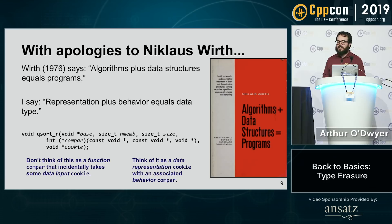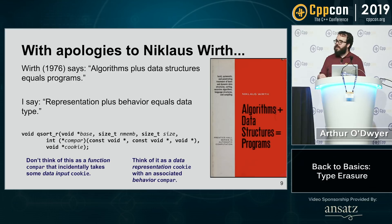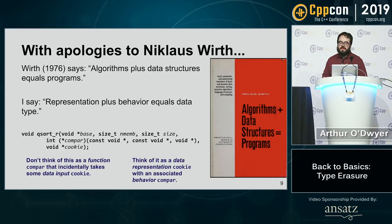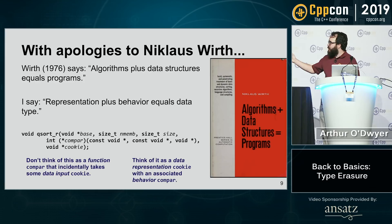Niklaus Wirth, in 1976, wrote a book called Algorithms Plus Data Structures Equals Programs. In the same way, I could say: if I have a behavior and a representation — an algorithm and a data structure — behavior plus representation equals data type. What is a data type? It's a representation — what do the bits look like — and it's a behavior — what do I do with them? Put those together and we get a data type.